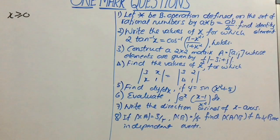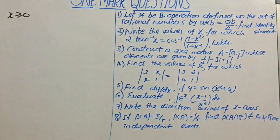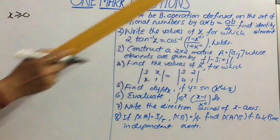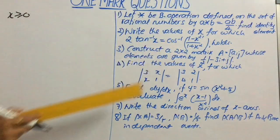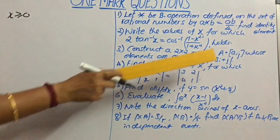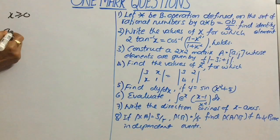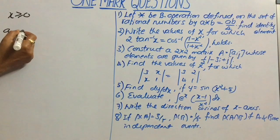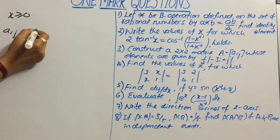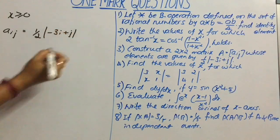Let us consider the third question. Consider a 2×2 matrix A equal to a_ij whose elements are given by half into modulus of minus 3i plus j. Let us consider the answer. For that, consider the element a_ij equal to half into modulus of minus 3i plus j.